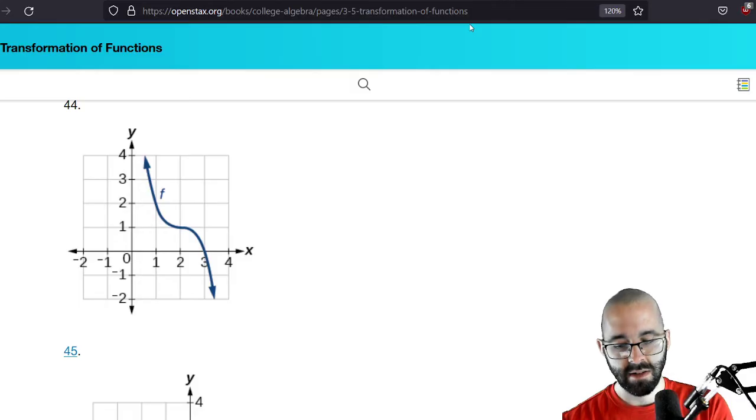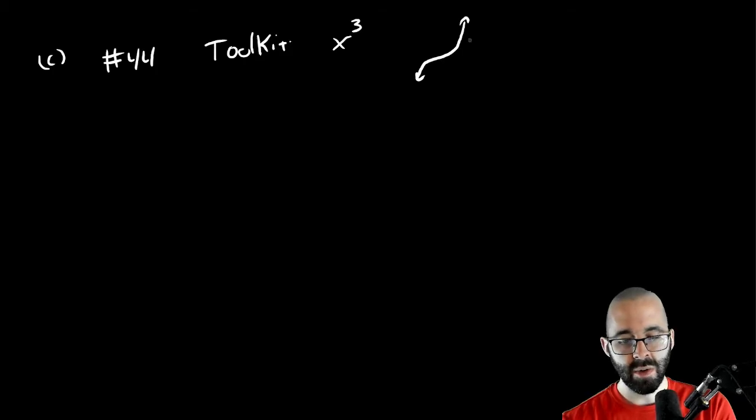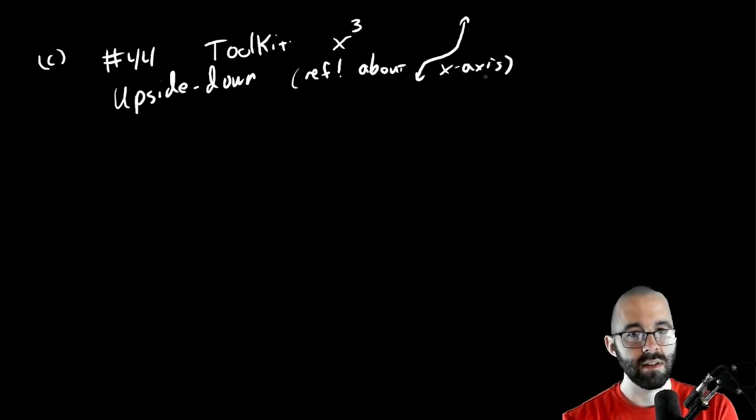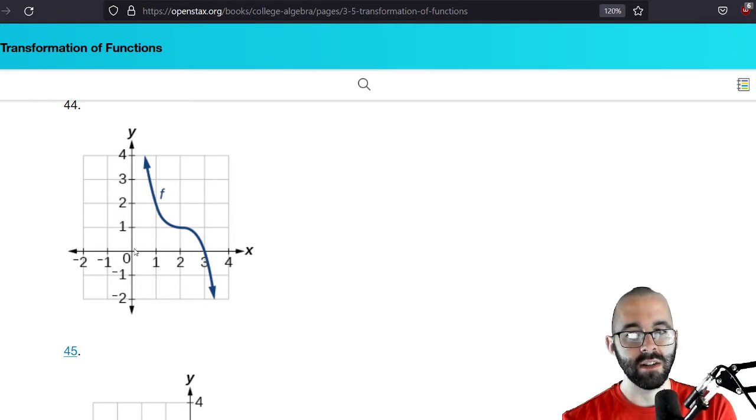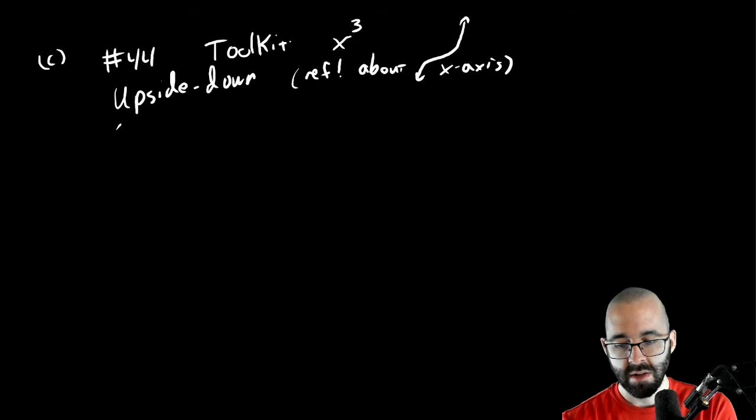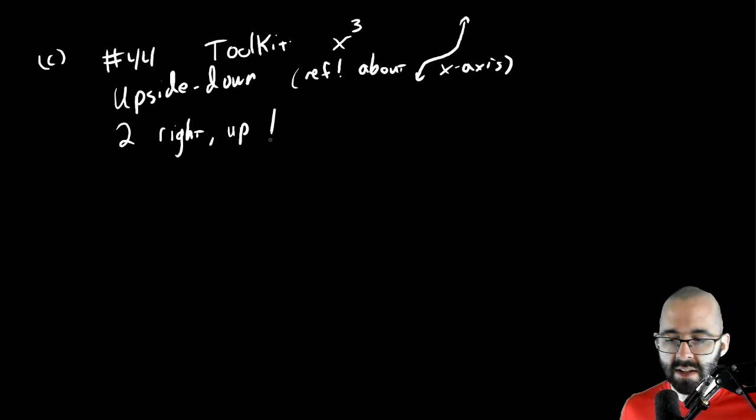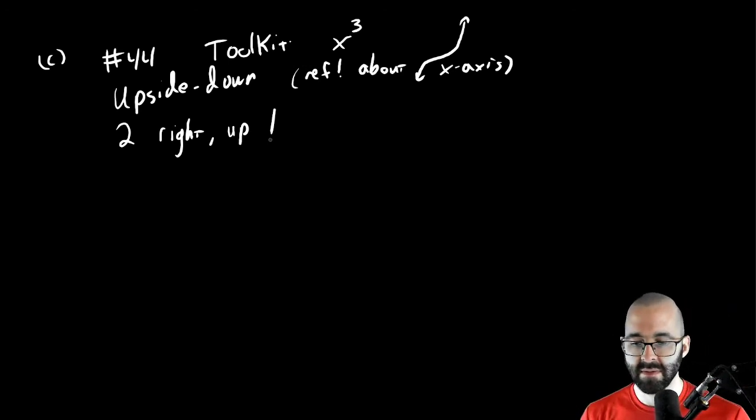But there's a lot of things happening here. Right? X cubed normally looks like this. This is upside down. Right? Going, it should be going up on the right but it's going down on the right. So it's upside down. Otherwise known as reflected about the x-axis. Also, the middle is usually over here. But our middle is right there. We have shifted to write and up one.